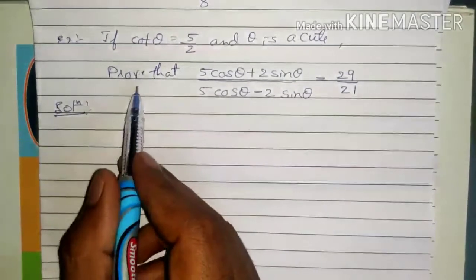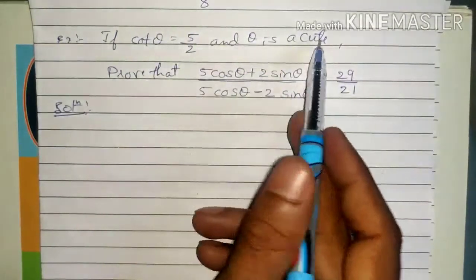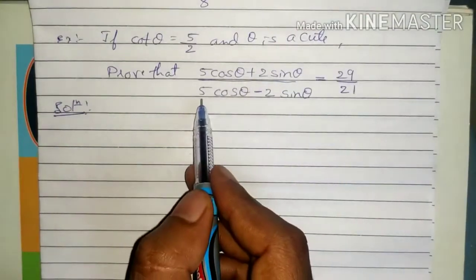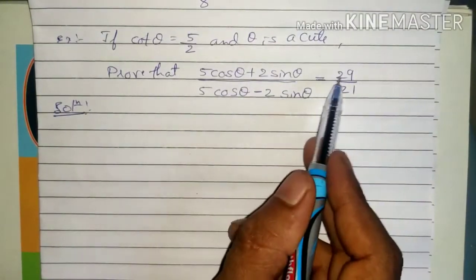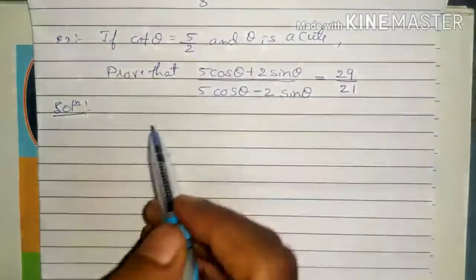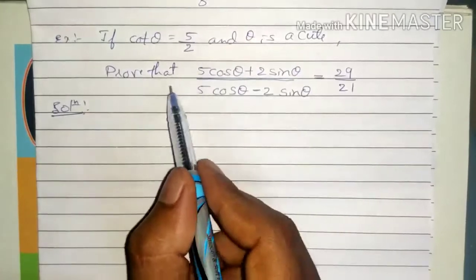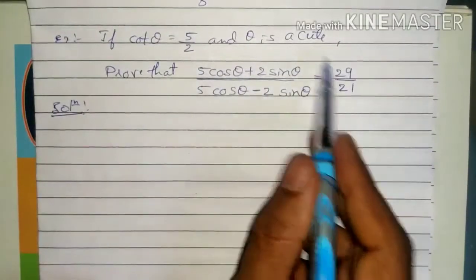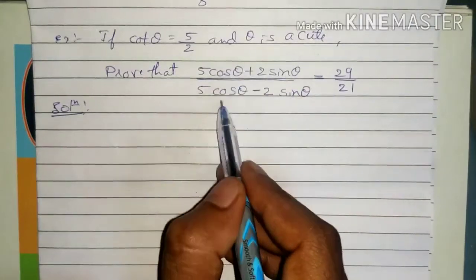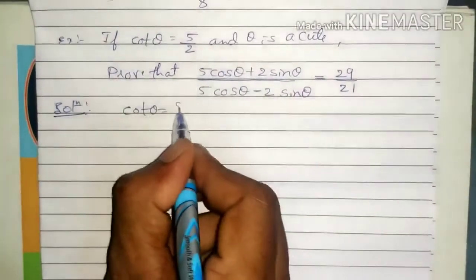Now we shall discuss another type of problem. If cot theta equals 5 by 2 and theta is acute, prove that 5 cos theta plus 2 sin theta divided by 5 cos theta minus 2 sin theta equals 29 by 21. Cot theta is given. We need to find other trigonometric values, and then prove this expression. Considering cot theta equals 5 by 2.